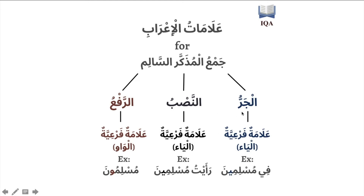So for both Nasb and Jarr, the sign of the Jama' Mudhakkar Salim being Mansoob or Majroor is a Ya in both scenarios. The context tells us which one it is: if it is a Maf'ul bihi, it is Mansoob; if it follows a harf of Jarr, it is Majroor.